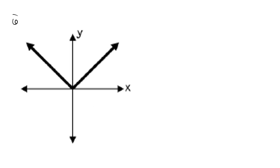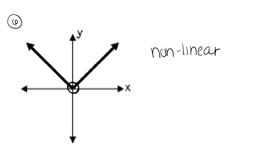For number six, even though there are two straight lines here, it is nonlinear because here in the center the graph changes direction, and so it is nonlinear.